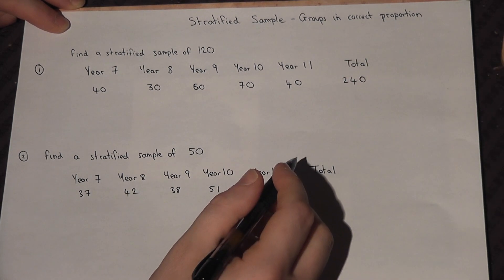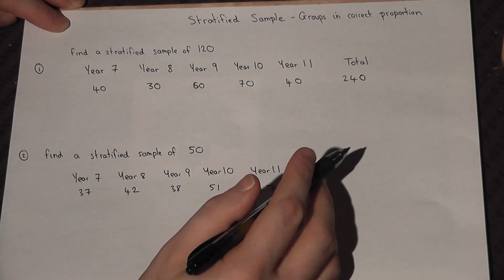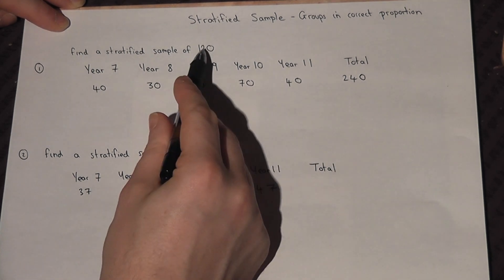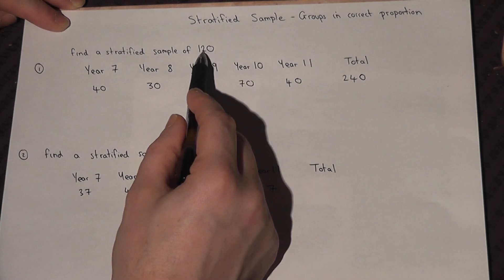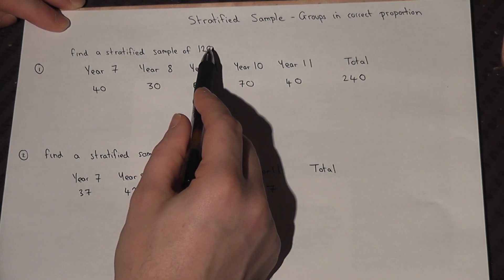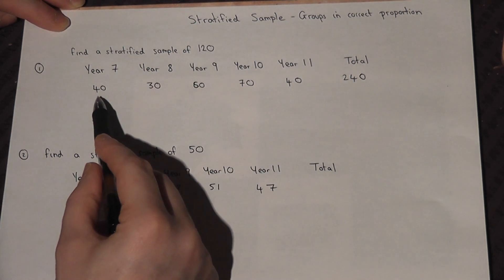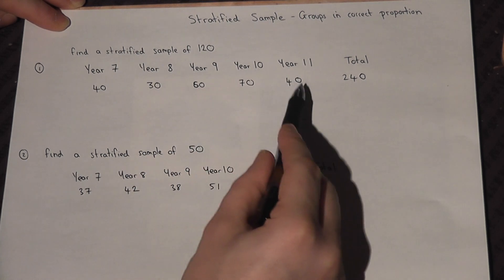Now I want to do a sample of 120 pupils out of 240. Rather than just pick 120 pupils at random, I want the correct proportion of pupils from each year group.